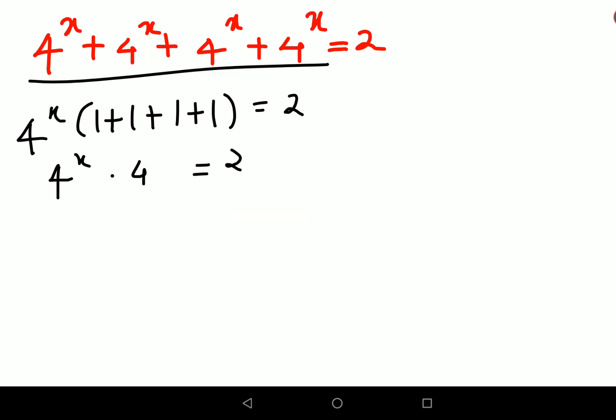So obviously let's try to keep the variables on one side, we will divide both sides by 4. So this cancels and this becomes 1 upon 2. So this becomes 4 raised to x equals to 1 upon 2.